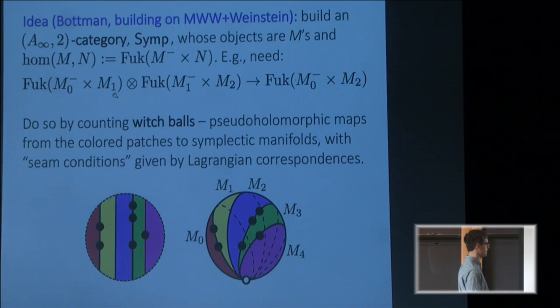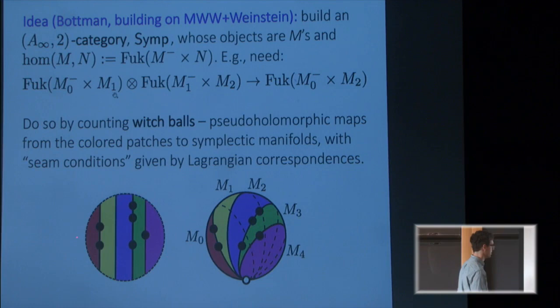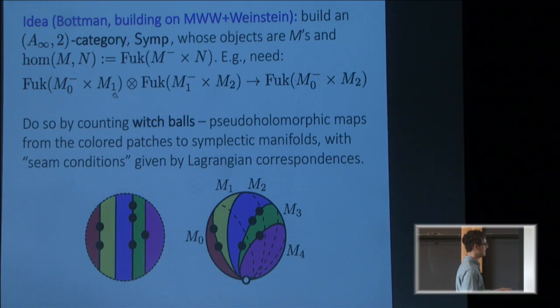The way you define one of these things is you start out by taking the plane. You draw some vertical lines. You put some points on the vertical lines. That's the domain. There don't have to be four lines in this number of marked points. That's just a representative example. And then you choose some symplectic manifolds called M0 up through M4 here and require the different patches to map into those respective manifolds with boundary or so-called seam conditions given by Lagrangians in the product of the adjacent symplectic manifolds.